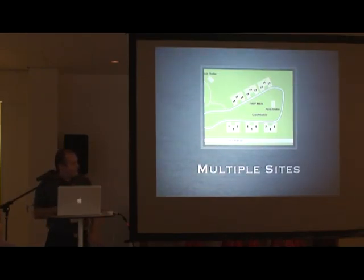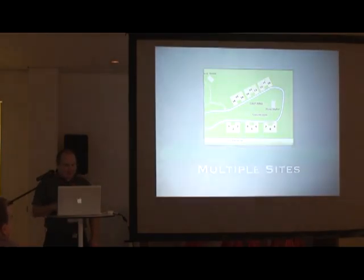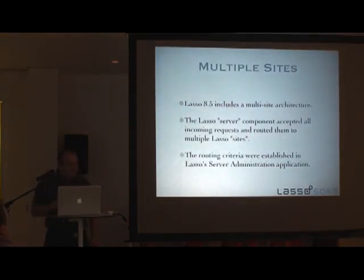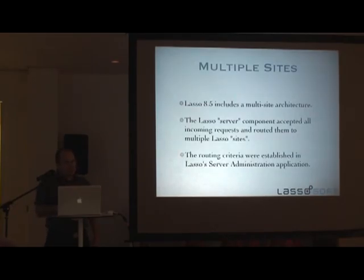I want to talk briefly about how Lasso 9 multiple sites work. Some of this is still in development and we're still figuring out best practices, so it may be subject to revision as we test more scenarios and get feedback. Lasso 8.5 has a multi-site architecture. When you first start up Lasso, there are actually two instances running — one we call the server and one we call the site. The server functions as a router. If you create eight sites, you have nine instances of Lasso running, and the server is responsible for examining incoming requests and routing them to one of those eight sites to process and send the result back to the web server. The routing criteria can be set in server administration.